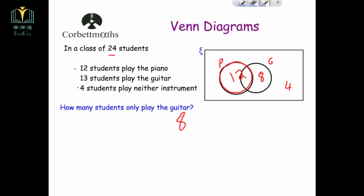Let's fill in the rest of the Venn diagram. We know 13 play guitar as the whole circle, and if there are 8 in the guitar-only section, that means 5 must be in the middle — because 5 plus 8 equals 13. Now we know there are 5 in the middle and 12 play piano in total, so 7 go in the piano-only section. We've filled in the Venn diagram. The answer to 'how many students only play guitar?' is 8.